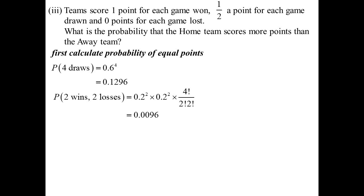That's 0.1296. Two wins, two losses. They would end up with the same number of points. So two wins, 0.2 squared. Two losses, 0.2 squared. But then how many ways could we arrange the letters WWLL? So four factorial on two factorial, two factorial. That gives us 0.0096.